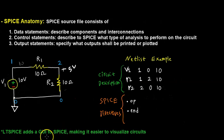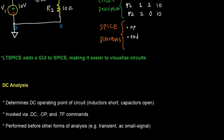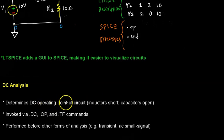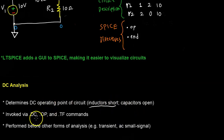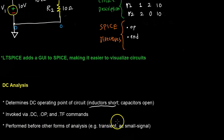LTSpice is one variant of the SPICE engine, and it adds a graphical user interface to SPICE, making it easier to visualize circuits. Let's quickly talk about DC analysis. There are other types of analysis such as transient and AC, but we're going to focus on DC analysis for a while. DC analysis determines the DC operating point of a circuit — it treats inductors as short circuits and capacitors as open circuits. It can be invoked via the .DC, .OP, and .TF commands, and it's performed before other forms of analysis. When you click on AC small signal or transient analysis, it has to do the operating point analysis first.